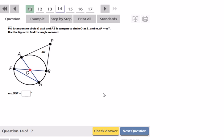PA is tangent to the circle at O, and PB is tangent to the circle at B. Measure of angle P is 48. That's already labeled for us. So use the figure to find the angle measure. They want O, G, F. So what they want to know is how many degrees are right here.